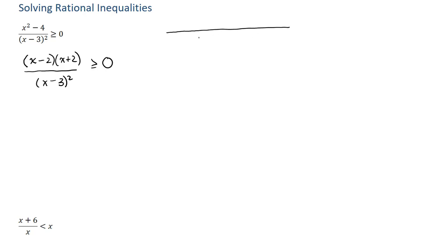I'm going to draw a number line and indicate the points where this expression is zero, and also you have to look at where the denominator is equal to zero as well. The numerator is zero if either one of those factors is zero, which means x could be positive 2 or negative 2. We also need to include where we are dividing by zero in the denominator, which is when x equals 3. Because there's an equal sign in our inequality, we could actually have x equal to 2 and negative 2.